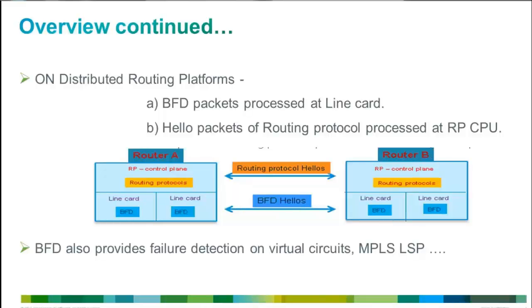Another advantage of BFD is that on distributed platforms, BFD packets can be processed on interface modules of the line card hardware, whereas routing protocol hello packets are processed by the control plane. As BFD packets are processed at line card hardware, it is less CPU intensive. As we can see in the diagram, BFD packets are processed at the forwarding plane in the hardware, while routing protocol hello packets need to be processed by the RP CPU.